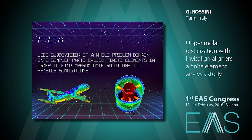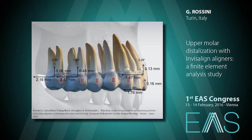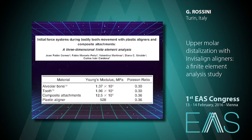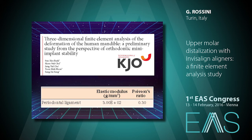Upper molar distalization was demonstrated to be effective with Invisalign, with a mean distalization of 2.5 millimeters for upper molars. For planning our study, we adopted the same technique as Gomez and collaborators for the building of the CAD model and for the Young's modulus and Poisson ratio of the different materials. We also adopted information from a study in the Korean journal for the periodontal ligament Young's elastic modulus and Poisson ratio.